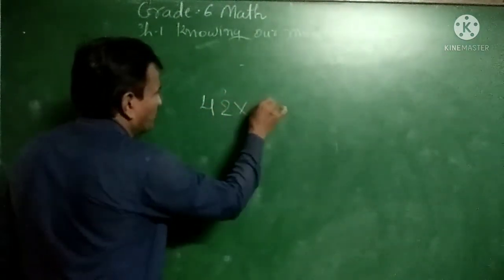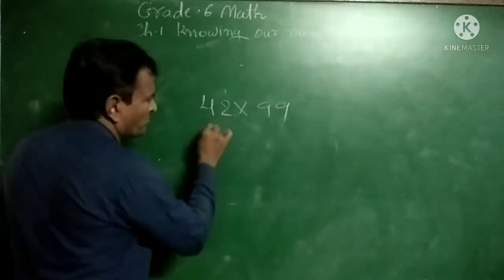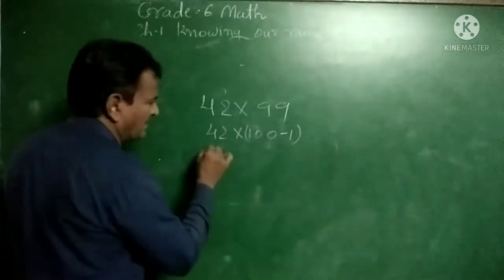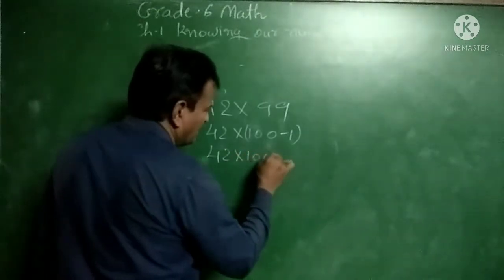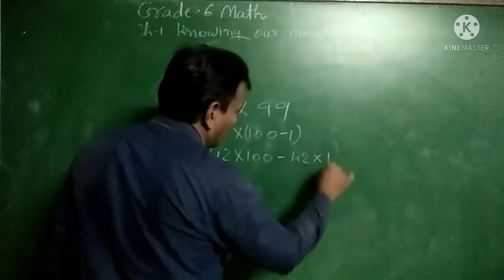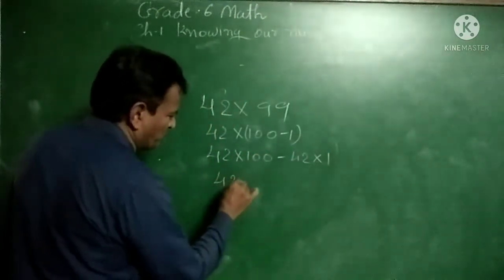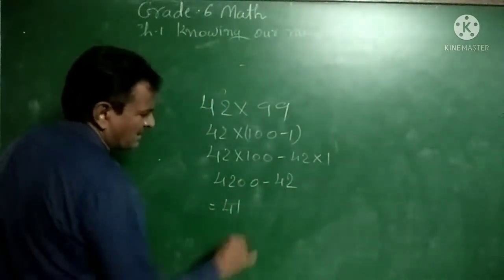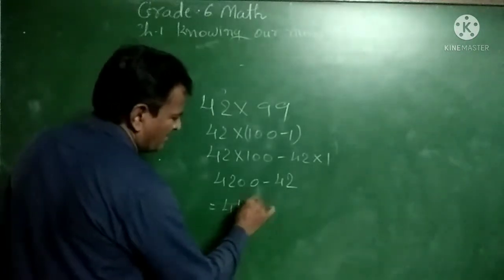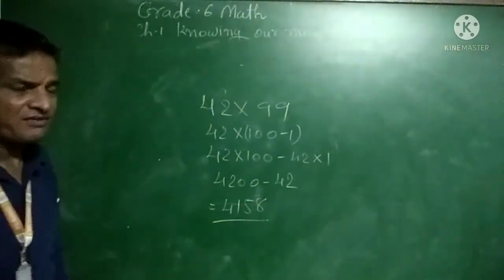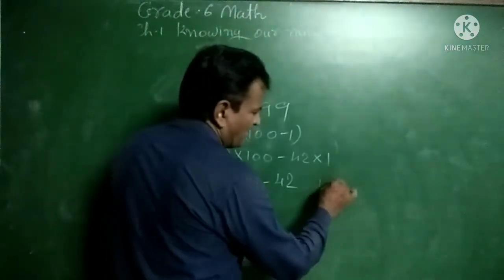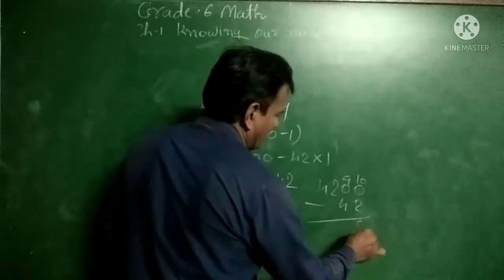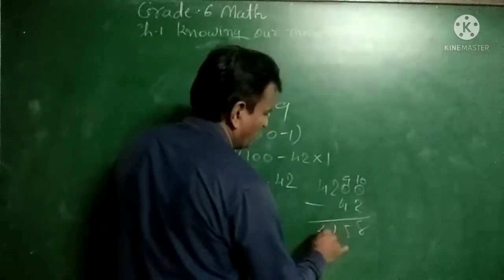One more example: 42 into 99. Here we write 99 as 100 minus 1, so 42 into 100 minus 42 into 1 equals 4,200 minus 42, which gives us 4,158. That is our answer.